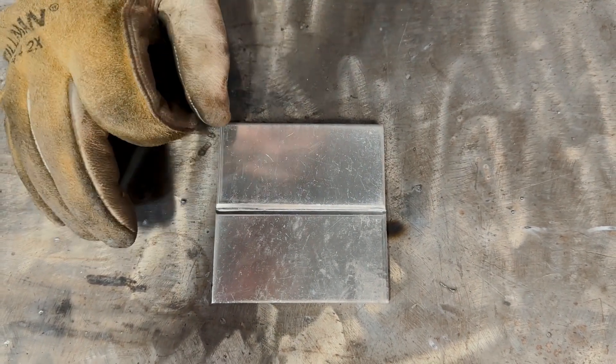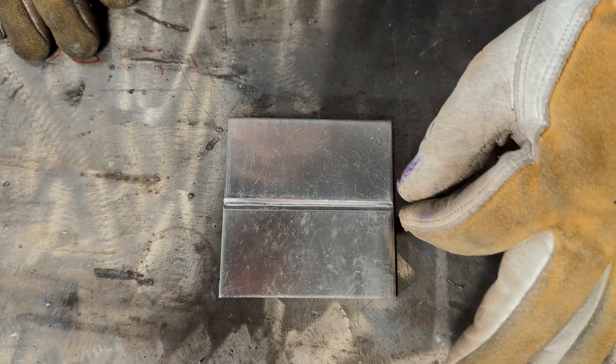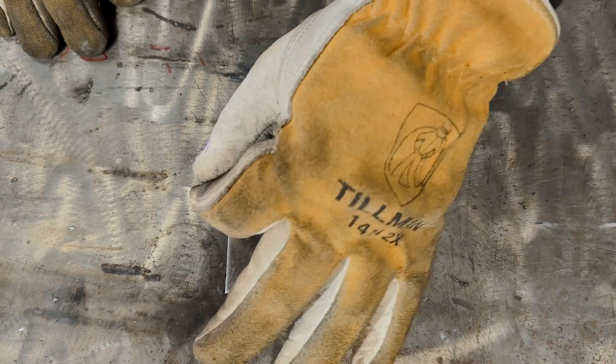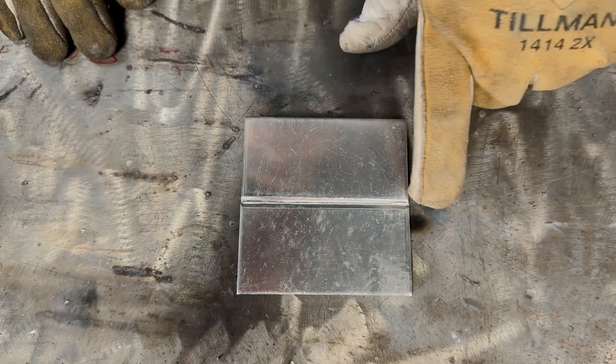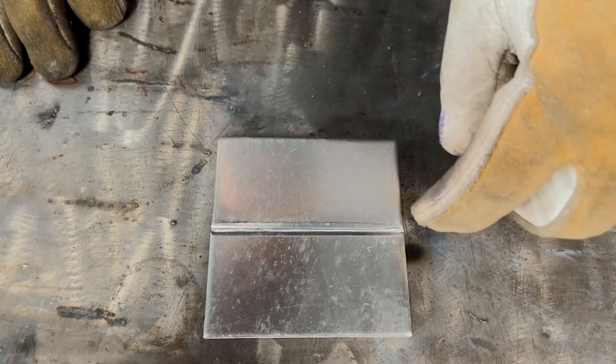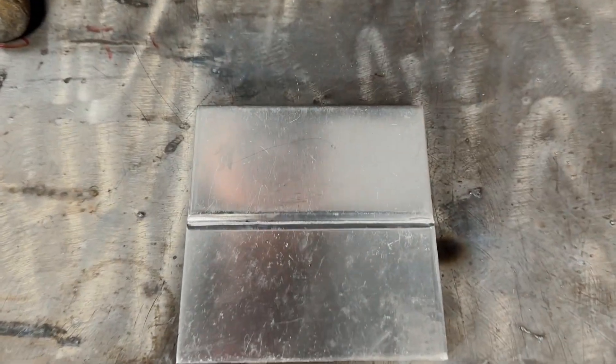If you wanted to get 100% weld, if this was a critical item, I would probably go in with a hard wheel designed for aluminum, grind this out a little bit until I see the other side, the root and then weld it and fill it in.